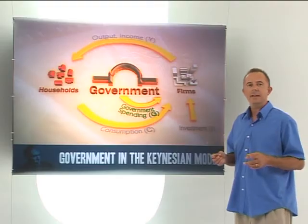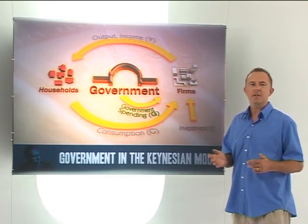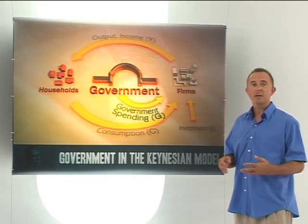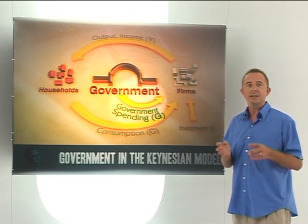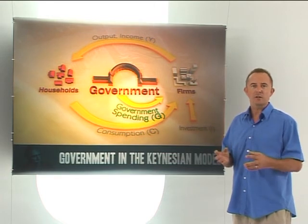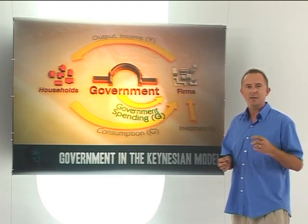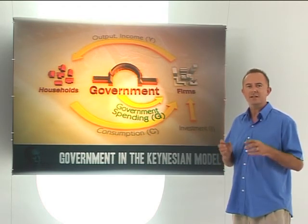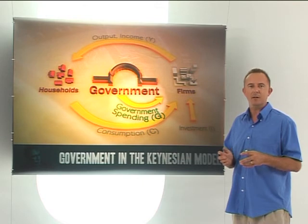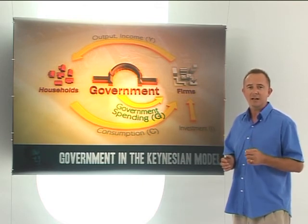The multiplier process is taking effect. Government spending is therefore an injection into the circular flow of spending, output, and income. An increase in government spending stimulates total spending, and therefore production and income in the economy increases. On the flip side, a drop in government spending decreases total spending in the economy, and production and income decline.